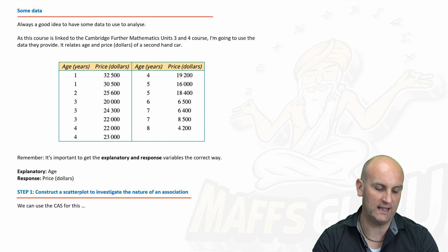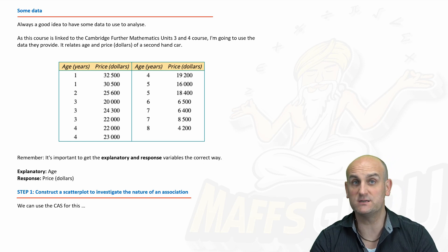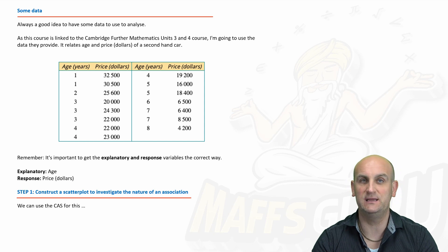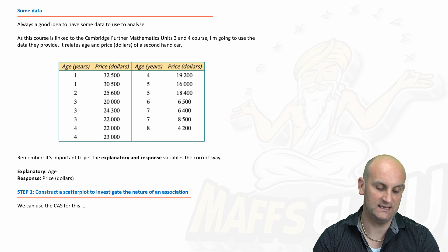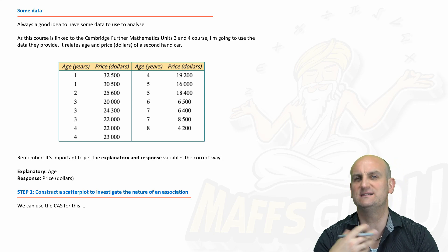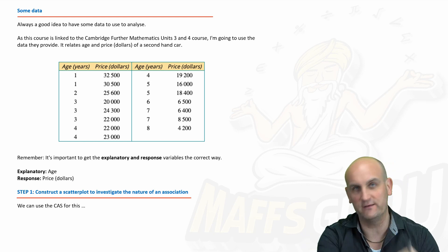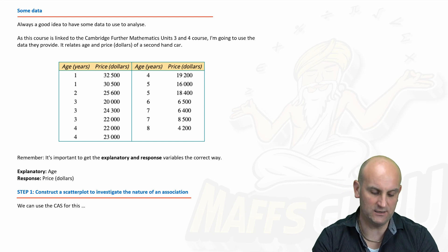Okay so what do we have here? We have age and price in dollars. Now luckily the question has told us somewhere that age is our explanatory and price in dollars is our response. Okay so I think this has something to do with the price of cars. If I remember it's about how as age increases the value of the cars decrease.